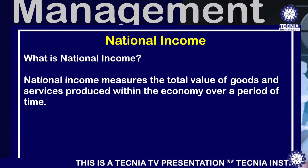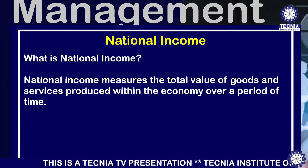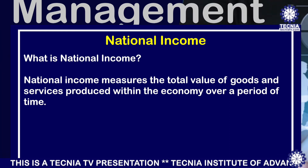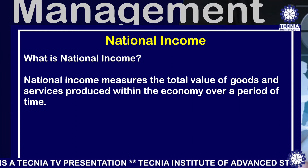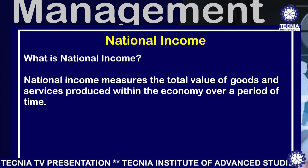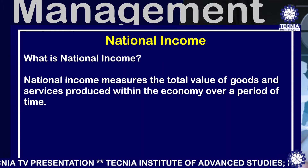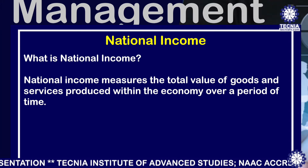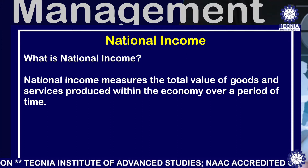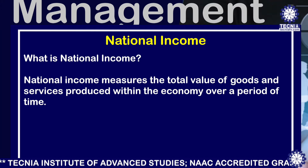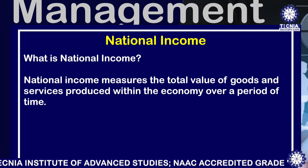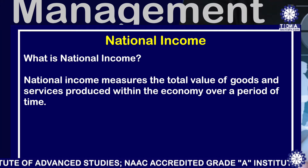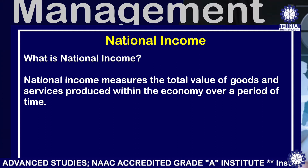National income measures the total value of goods and services produced within the economy over a period of time. It can be measured in two terms: money national income, that is the national income measured in terms of current prices, and real national income, that is the national income measured in constant prices.